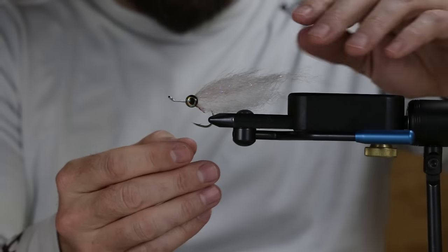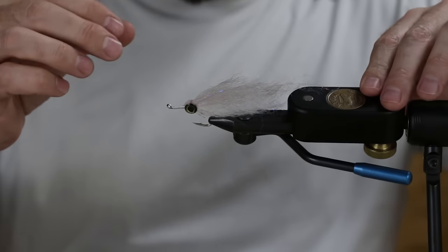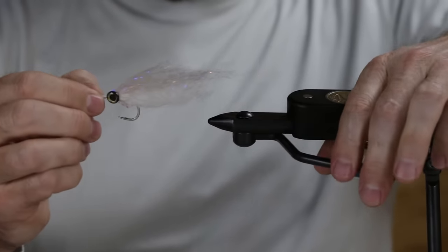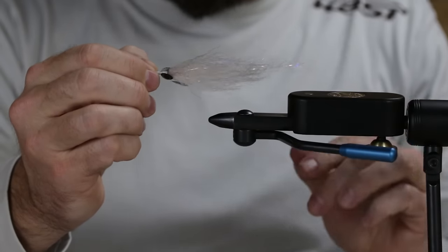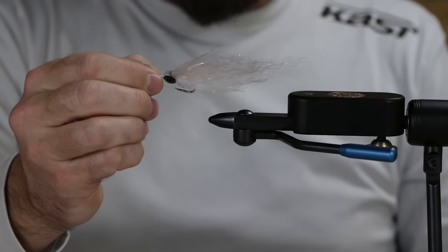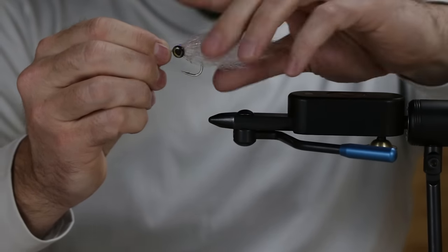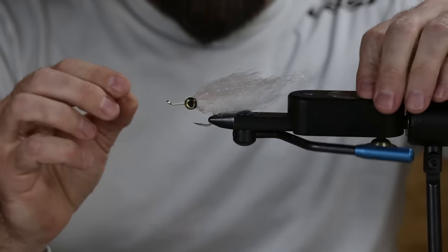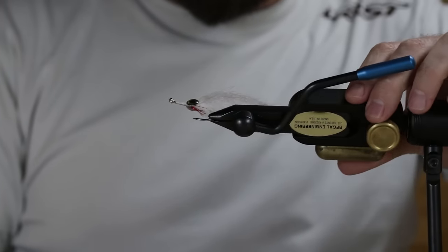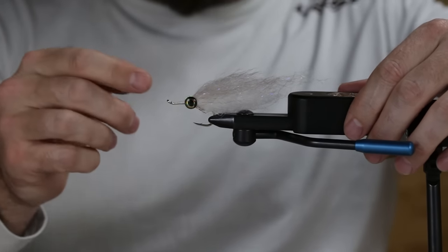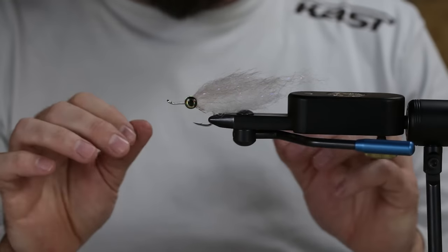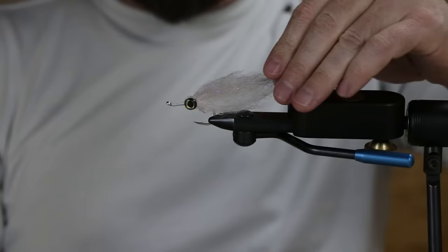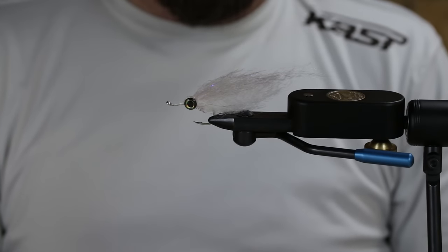And there you go, that is a finished baitfish fly. You can see what that does by layering that Farrar's in there. You can see the profile it creates on the fly, creates a really nice baitfish profile. And when this gets wet and that fiber starts to blend through and smooth out, it really imitates a baitfish nicely. So I'll usually get to this point, tie a bunch in production, and then come back in and epoxy the head solid. But there you go, super easy, super deadly baitfish pattern. Hope you guys enjoy.